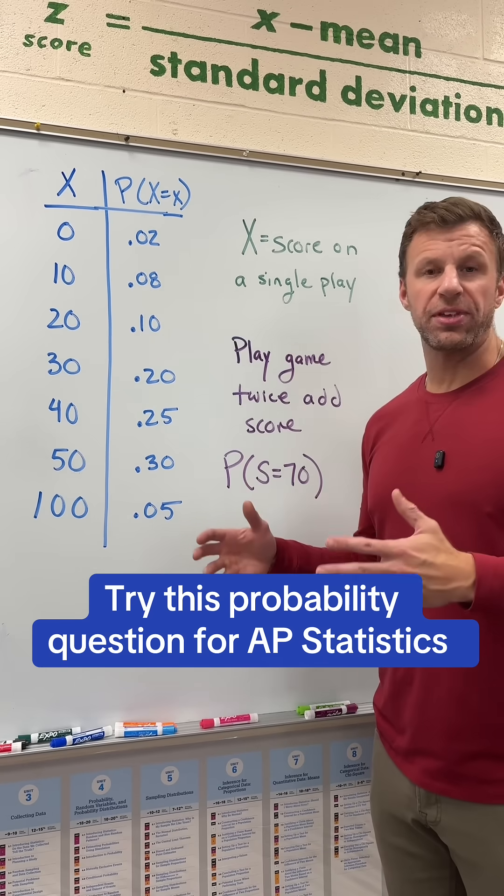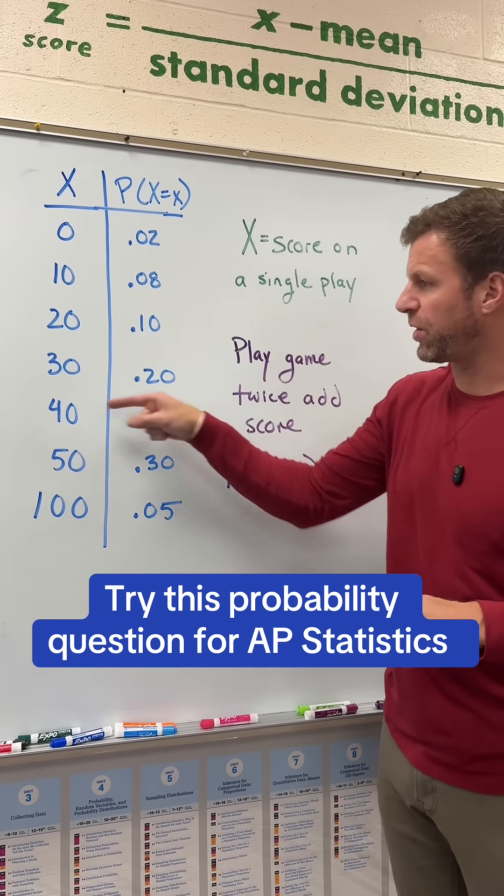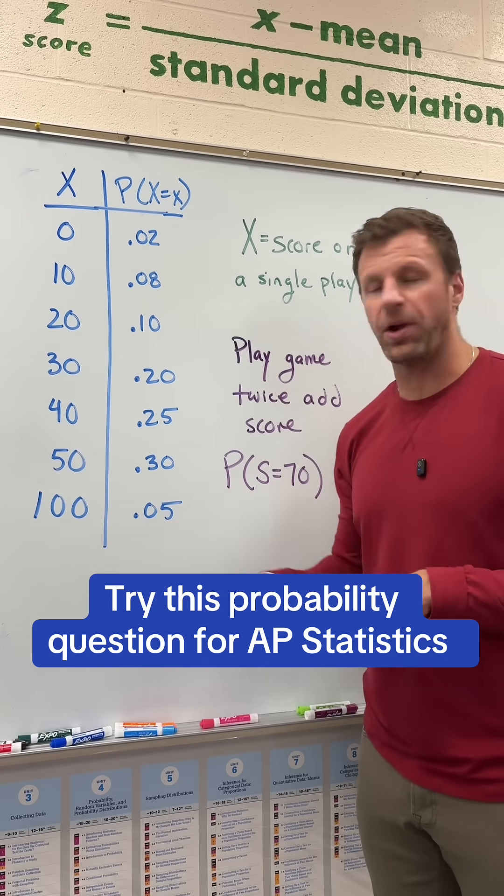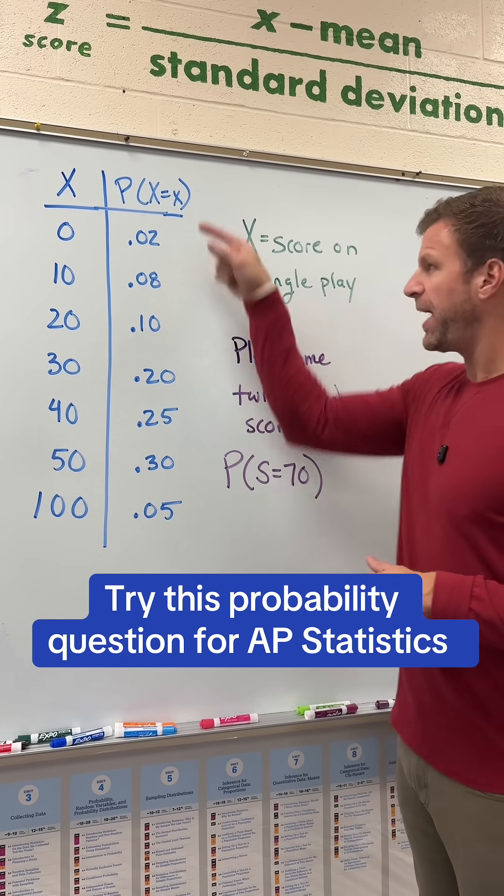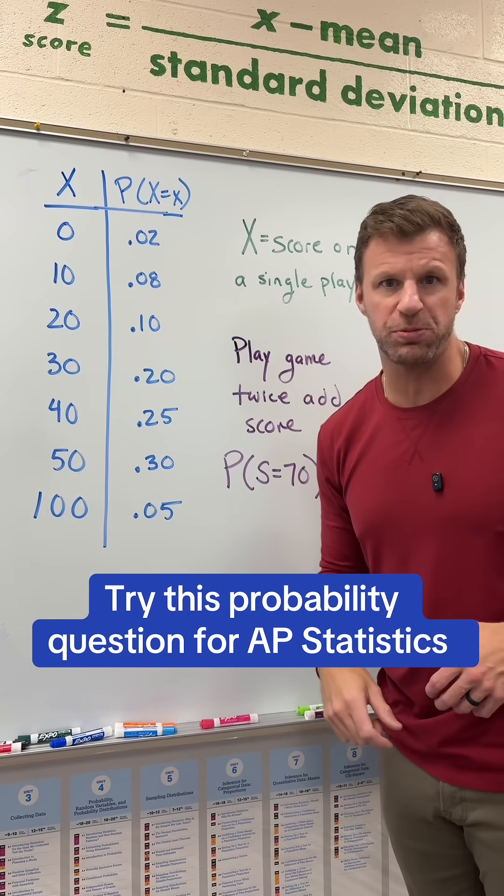So we have a game and the outcome of the game is a discrete random variable X. The outcomes are 0, 10, 20, 30, 40, 50, or 100 points on any one play of the game.